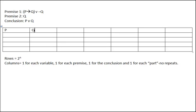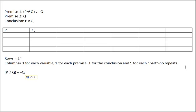Premise two is already there as q. When putting in premise one, it might be tempting to simply take the whole first premise and stick it in a column. However, the problem is we wouldn't be able to figure out the truth values for it just by sticking it there, because we don't have all the parts. So we have to break down this complex statement into its simpler parts. This is the main part and it will get its own column, but we need to have the parts up there first.